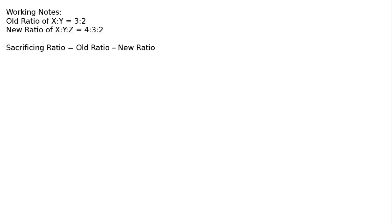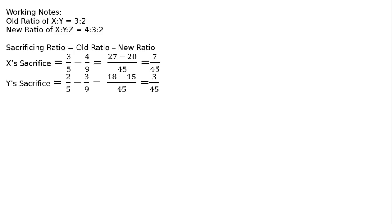Sacrificing ratio equals old ratio minus new ratio. For X: old share 3/5 minus new share 4/9. LCM is 45, so 27/45 minus 20/45 equals 7/45. For Y: 2/5 minus 3/9, LCM 45, so 18/45 minus 15/45 equals 3/45. Therefore the sacrificing ratio of X to Y is equal to 7 is to 3.